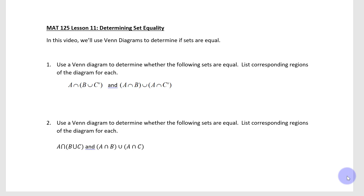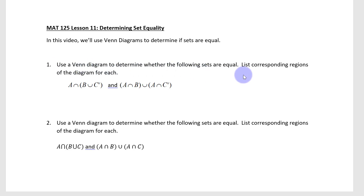This is MAT125, lesson number 11: Determining Set Equality. In this video, we'll use Venn diagrams to determine if sets are equal. The first example says: use a Venn diagram to determine whether the following sets are equal, and list the corresponding regions of the diagram for each.